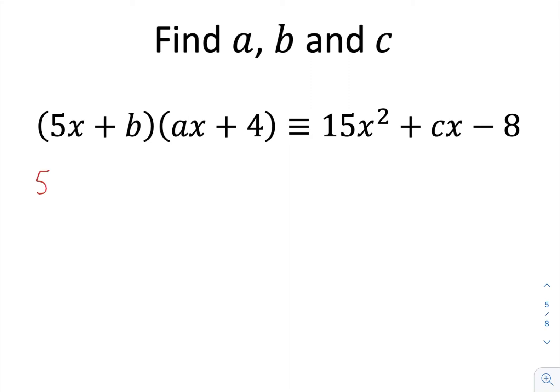So we're going to have 5ax squared, which is that, and then we're going to have 20x from that one, and then we're going to have abx and 4b. And that's all identical to 15x squared plus cx subtract 8. Notice here that we've got three unknowns a, b and c to go and find as well.